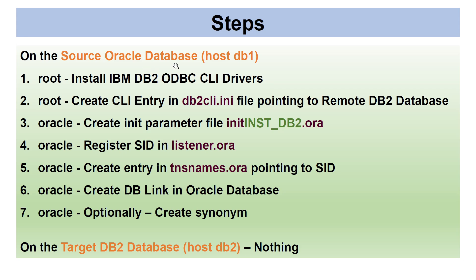Here are the high-level steps on the source Oracle database hosted on db1. As root: install IBM DB2 ODBC CLI drivers, and create a CLI entry in db2cli.ini pointing to the remote DB2 database. As oracle: create an init parameter file called init_db2.ora — this becomes the SID — register that SID in listener.ora, and create an entry in tnsnames.ora pointing to that SID. Then log into the database and create the DB link, and optionally create a synonym.